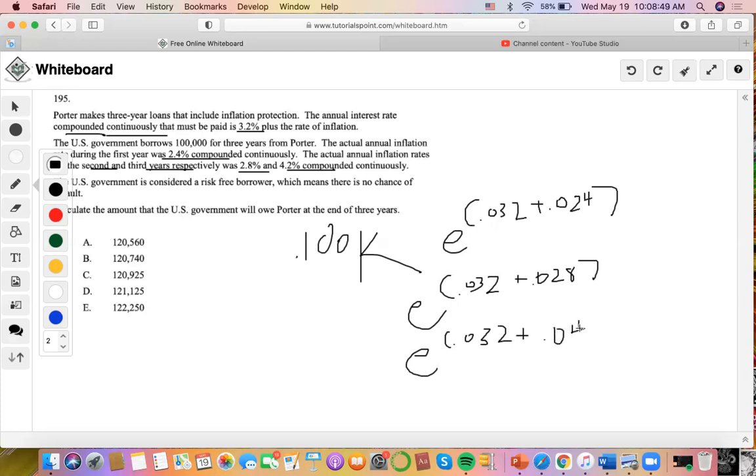So each of the three years are compensated on top of the initial amount borrowed. Now we're going to slow down. I'm going to do E to the 0.032 plus 0.034, times E to the 0.032 plus 0.034.